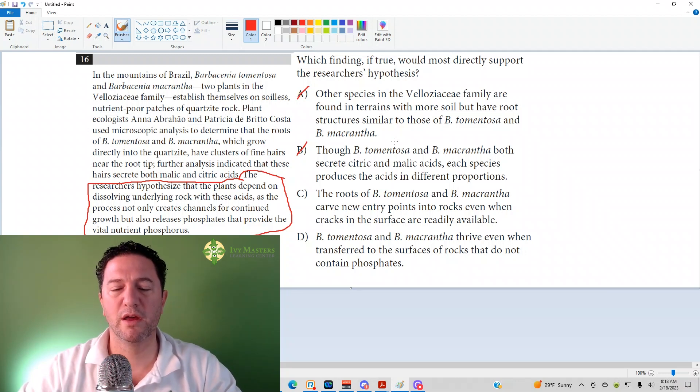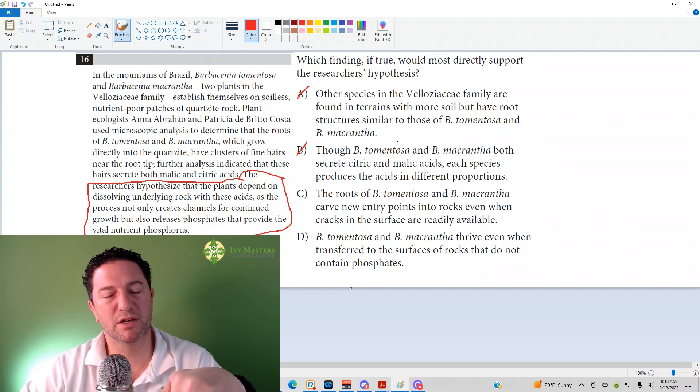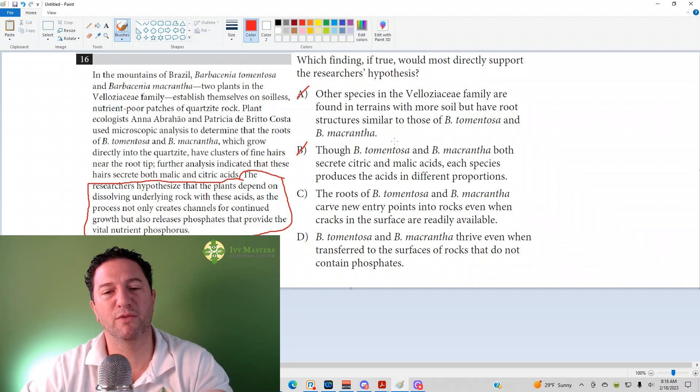Now that one might make you pause for thought. So if there's a crack in the surface already available, and the plant does not use it, that might be because it needs to make its own tunnel so it can convert that rock into phosphorus, which would be food for itself. So answer choice C actually looks good.